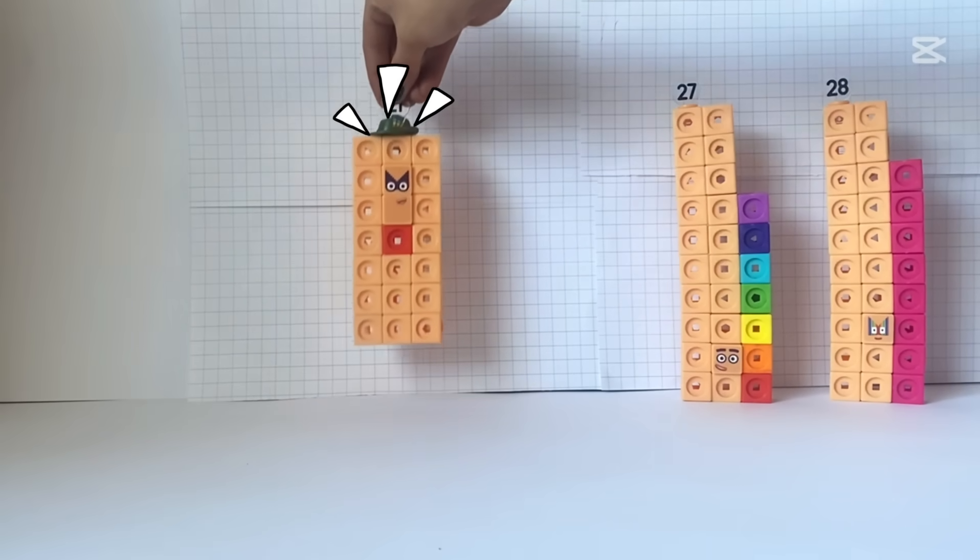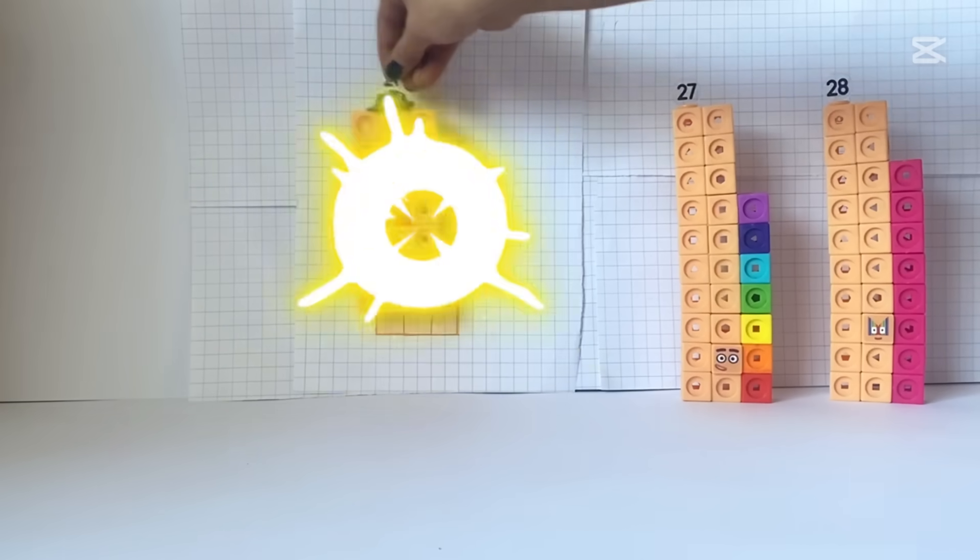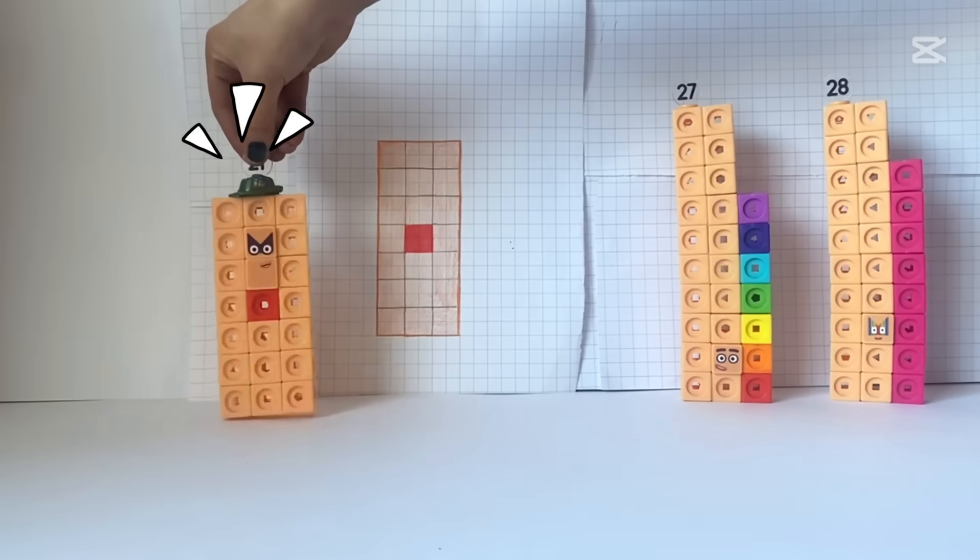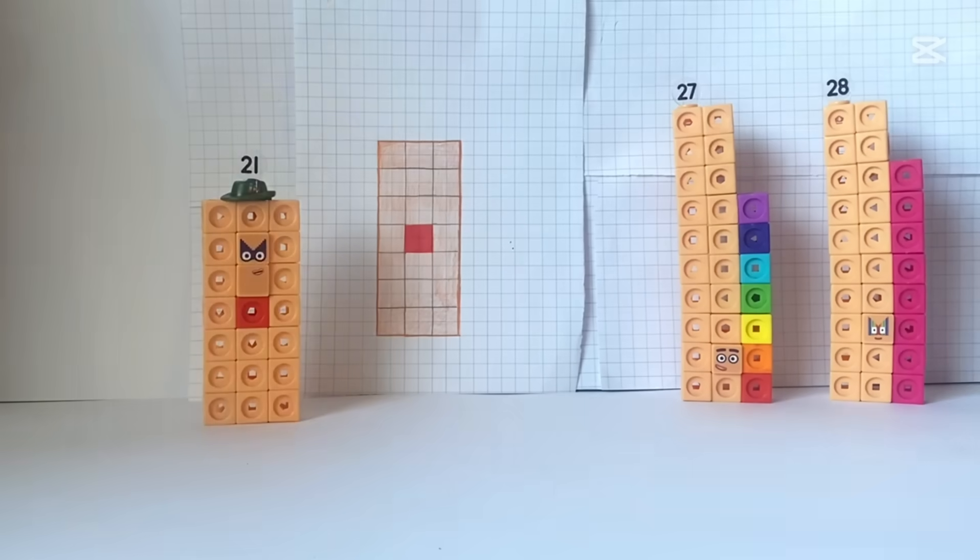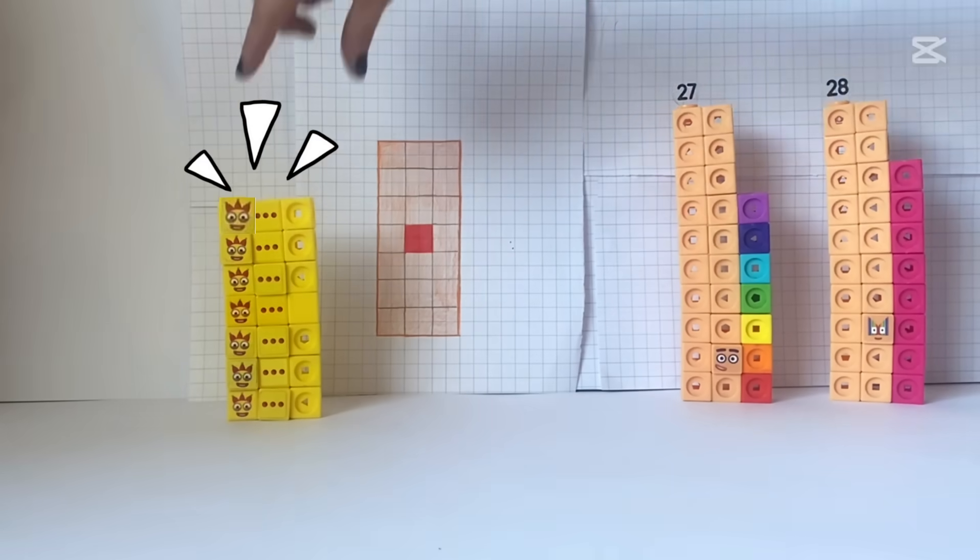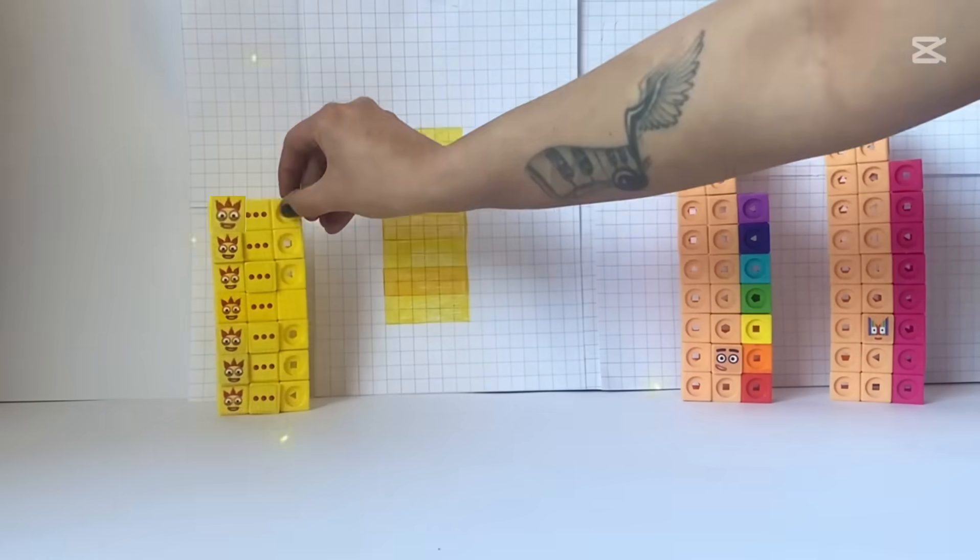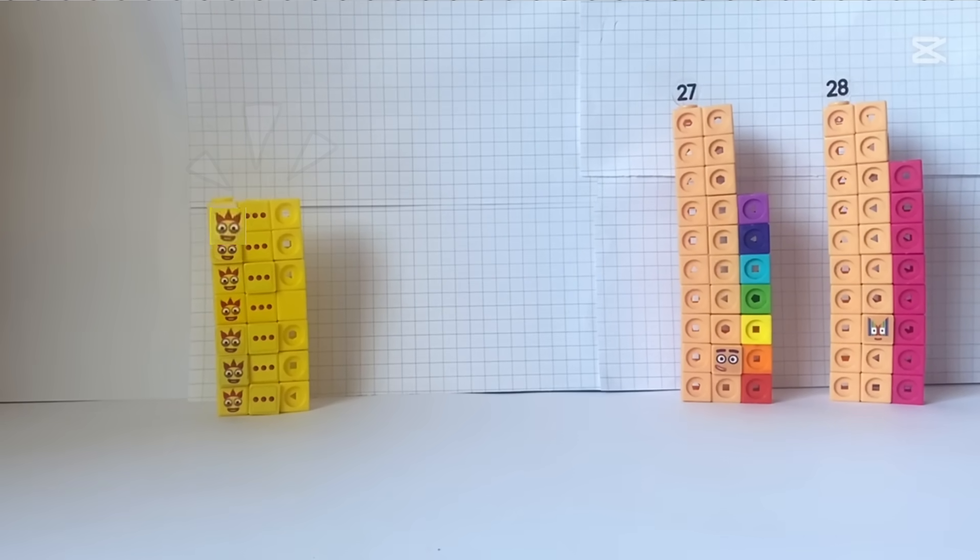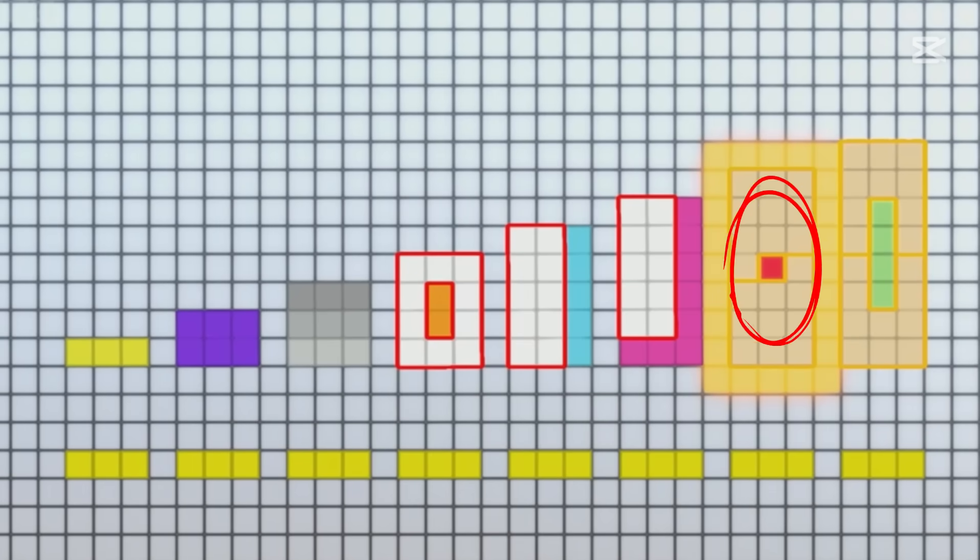Rectangles are the simplest! Look! My 21 blocks can make 7 lots of 3! See? So, I fit the pattern of the family of 3's between 18 and 24!